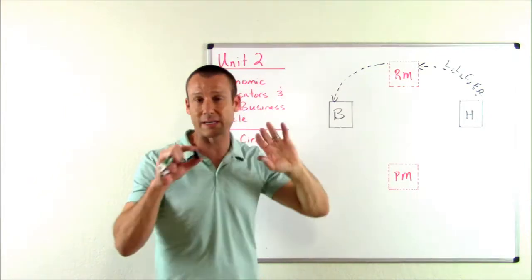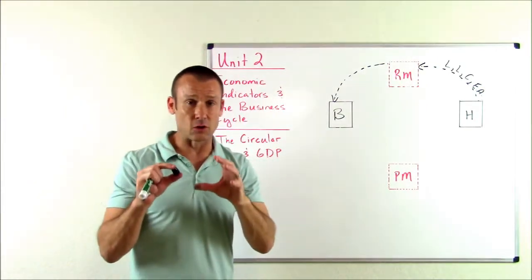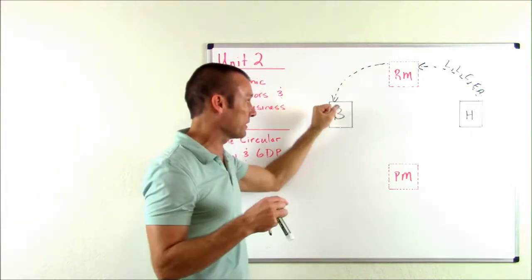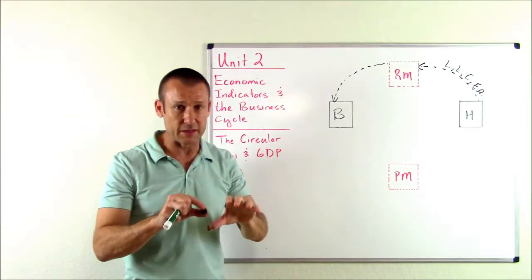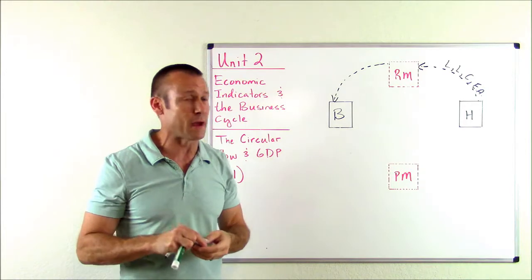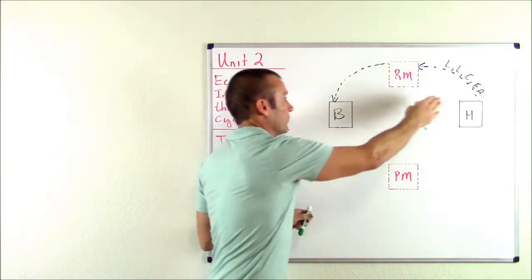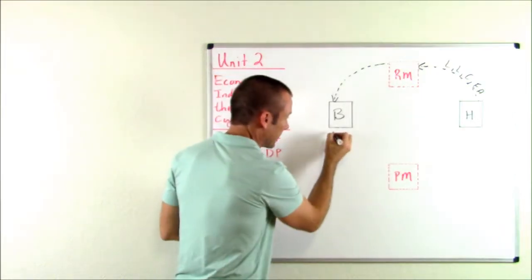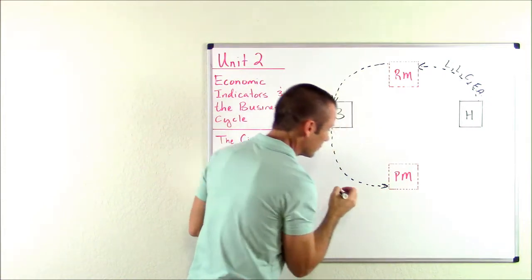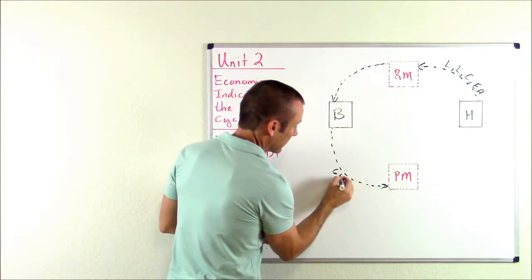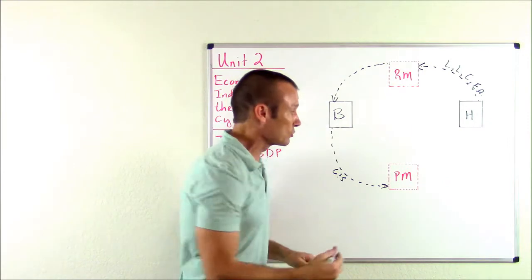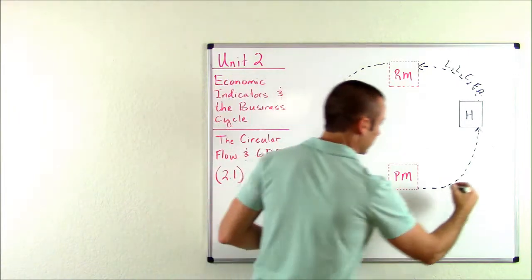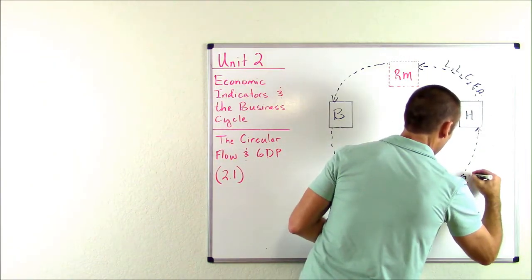There are just four types of resources or factors of production that businesses use to make goods and services when looking at the economy from a big picture standpoint, which is what we're doing in macroeconomics. So we've got those resources flowing to businesses. Businesses use those resources to produce goods and services, and then businesses supply those goods and services to the product market. And of course, households demand those goods and services. That's how the tangible things — resources and goods and services — are flowing.